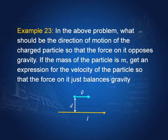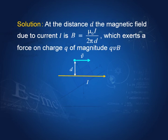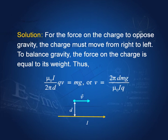In the above problem, what should be the direction of motion of the charge particle so that the force on it opposes gravity? We require the force to be upward to oppose gravity, which acts downward. Obviously, V must be from right to left instead of left to right, so that the two currents are now anti-parallel and therefore they will repel. The force on this particle would then be upwards, and we can balance this with the weight of the particle to get the necessary velocity.